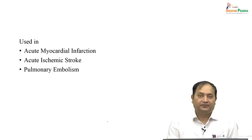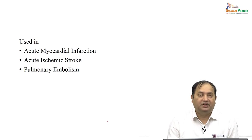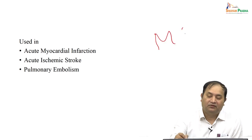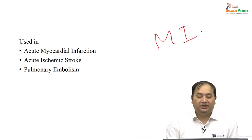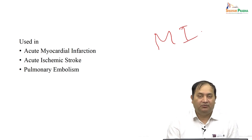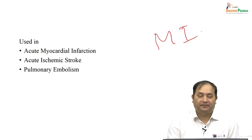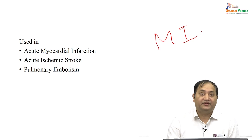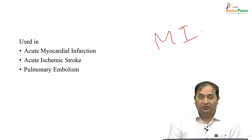What are the common conditions for which we use tissue plasminogen activators? First is acute myocardial infarction (MI). Second is ischemic stroke. Third, like urokinase, it is used in pulmonary embolism. So, the three conditions are acute myocardial infarction, acute ischemic stroke — not hemorrhagic, because of the risk of cerebral bleeding — and pulmonary embolism.